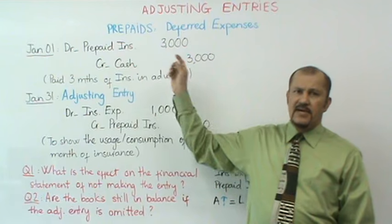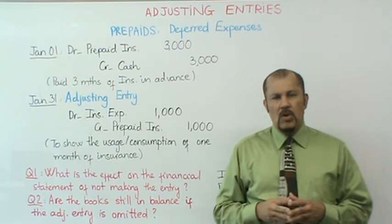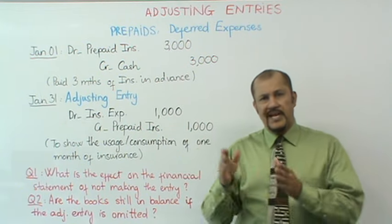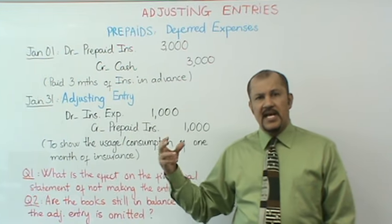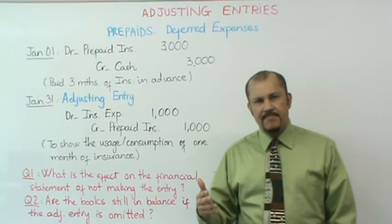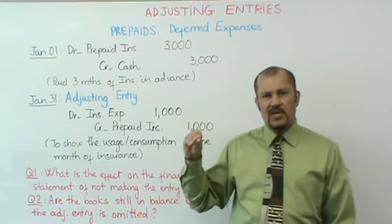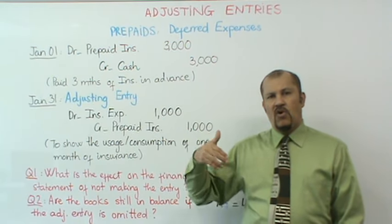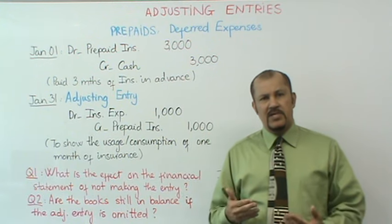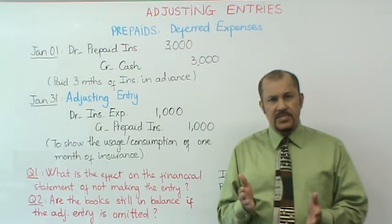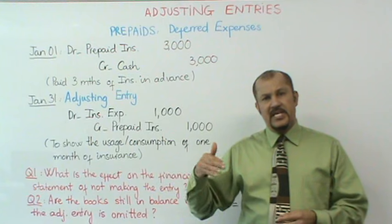Notice that next to prepaid I have the words 'deferred expenses.' A prepaid is an example of a deferred expense. Deferred means postponed to a later period. When you first acquired that insurance coverage in advance, you recorded it as an asset. Then, a month later, with the passage of time, that asset becomes an expense in small parts. You acquired a $3,000 asset, and one month later $1,000 of that asset has become an expense. When you first spent the $3,000 cash, you did not record it all as an expense — you recorded it as a prepaid insurance asset and deferred the recognition of that expense over time.